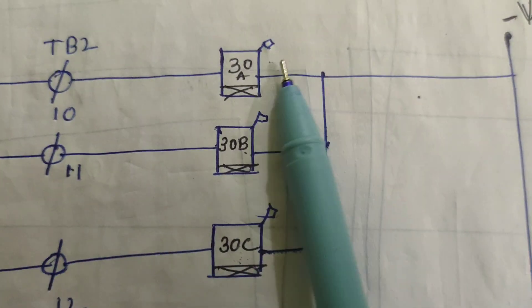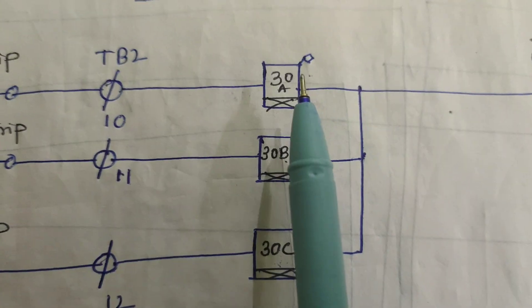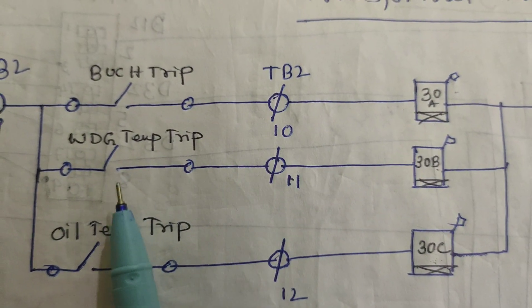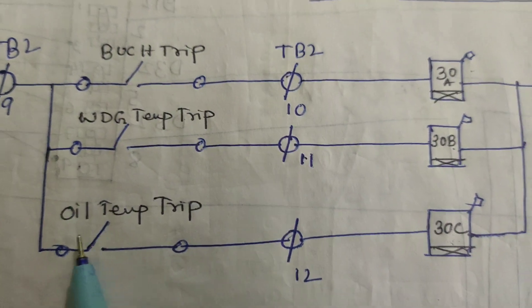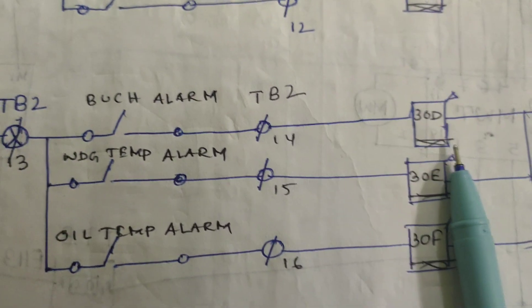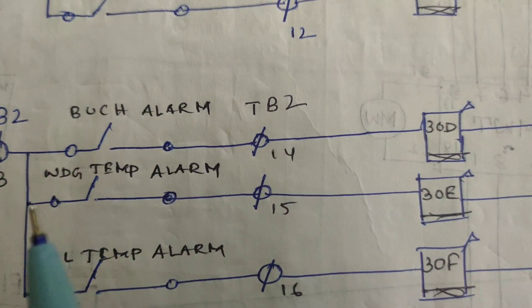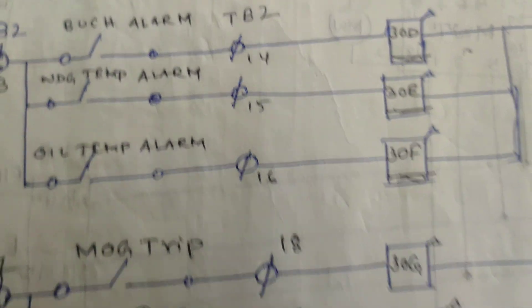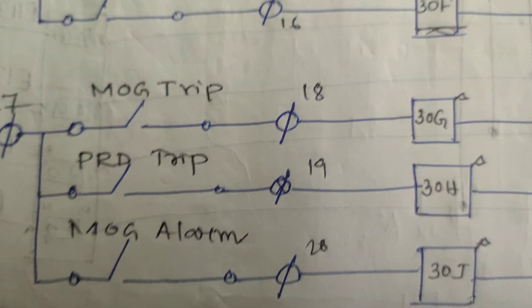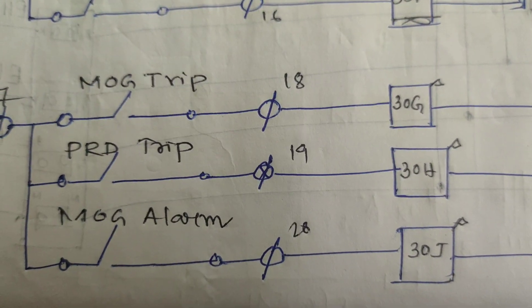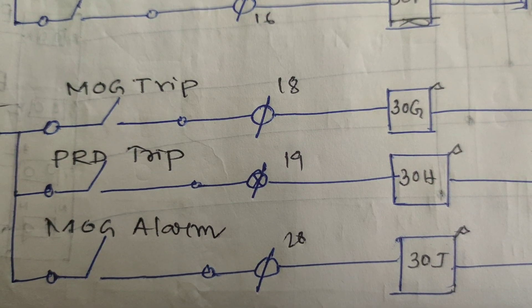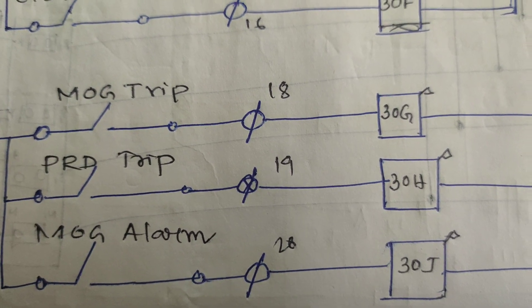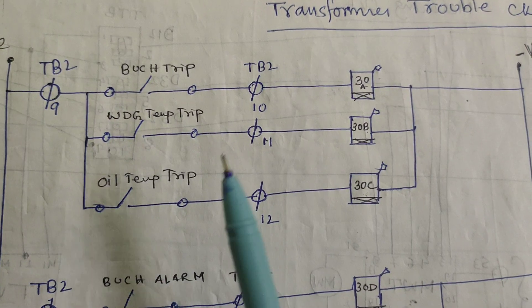30A is the Buchholz strip flag relay. 30B is the winding temperature trip relay. 30D is the Buchholz alarm. 30E is the winding temperature alarm. 30F is the oil temperature alarm. 30G is the MOG trip relay. 30H is connected for the PRD trip. 30J is for the MOG alarm.